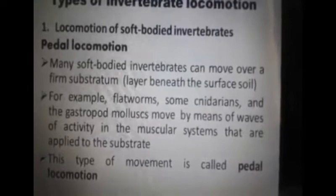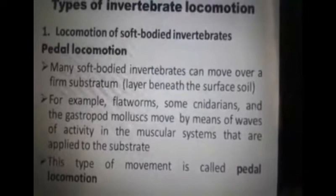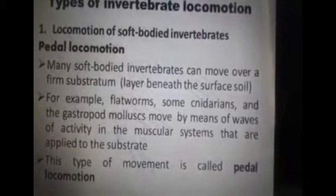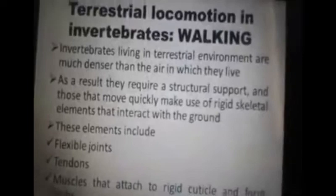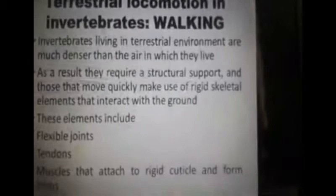In the case of flatworms and nematodes, another type of locomotion is seen — the looping movement. Looping movement occurs in leeches and in caterpillars. Next is terrestrial locomotion in invertebrates.